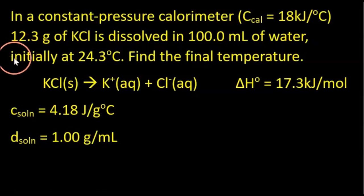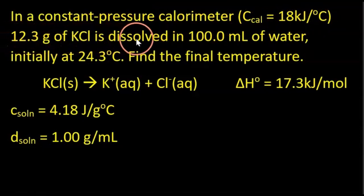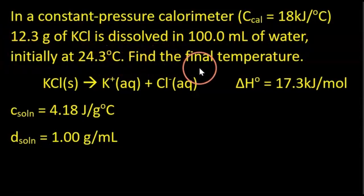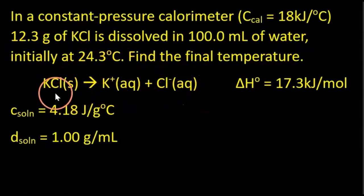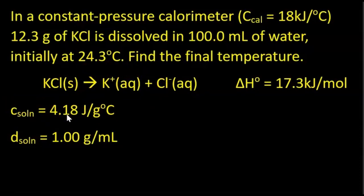This next exam problem builds on the last one and is a bit more complicated. In a constant pressure calorimeter with a heat capacity of 18 kilojoules per degree Celsius, 12.3 grams of KCl is dissolved in 100.0 mL of water initially at 24.3 degrees Celsius. We need to find the final temperature. The standard enthalpy change of the dissolution reaction is positive 17.3 kilojoules per mole. The specific heat of the solution is approximately that of water, and the density of the solution is 1.00 grams per mL.